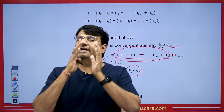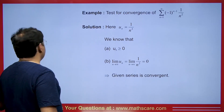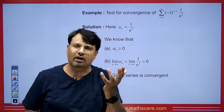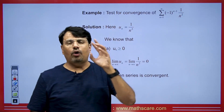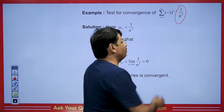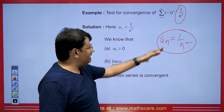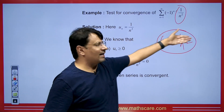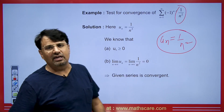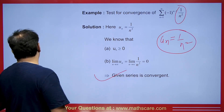Now let's look at some exam questions. First question: for summation n equals 1 to infinity of minus 1 to the power n minus 1 times 1 upon n squared — prove that this alternating series converges. Here u_n equals 1 upon n squared. It is greater than or equal to 0. Second, it is decreasing as n increases. Third, the limit as n tends to infinity of 1 upon n squared equals 0. All three conditions are satisfied, so the series is convergent.